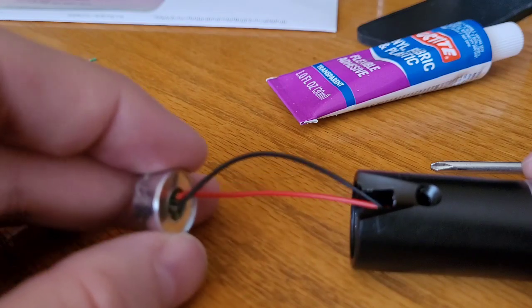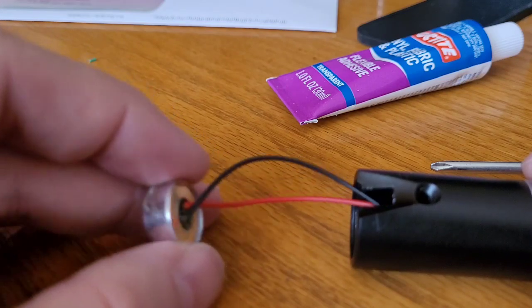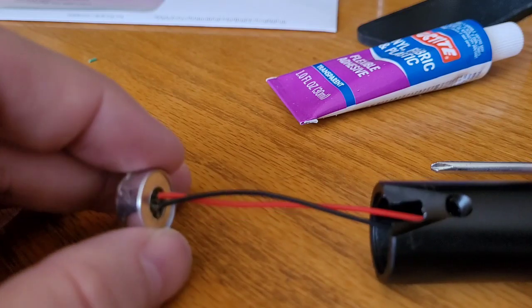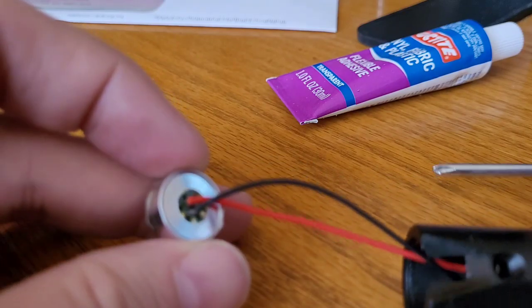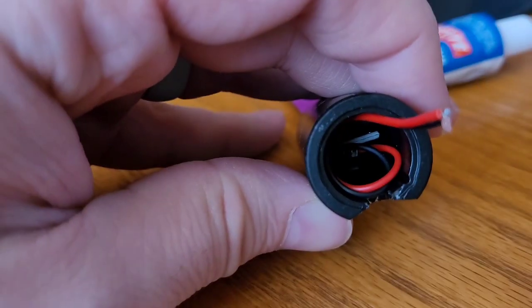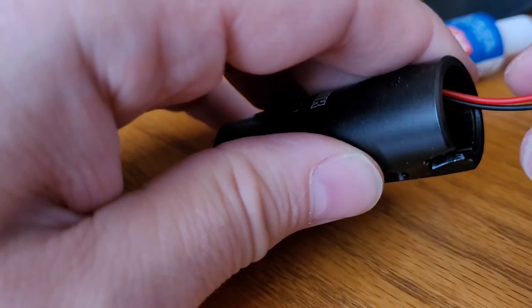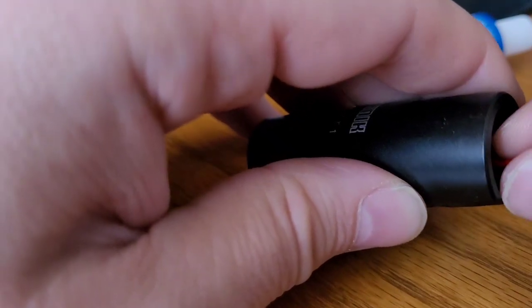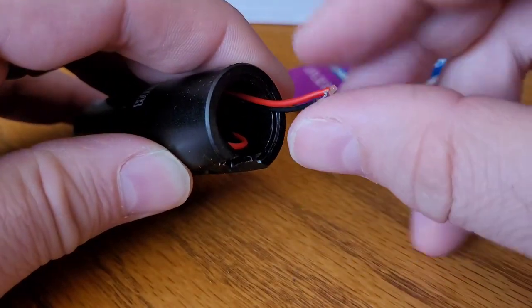Cut out most of the wiring there. That part sucks. Alright, so what I'm going to do now is kind of coil the wires down in there. That way when I put this on a capsule, we should be in business.